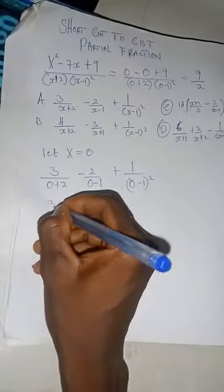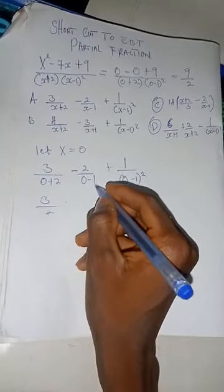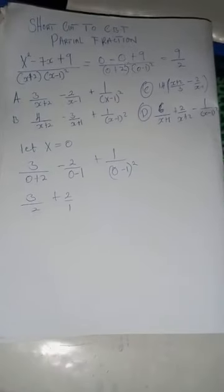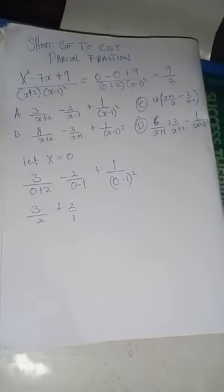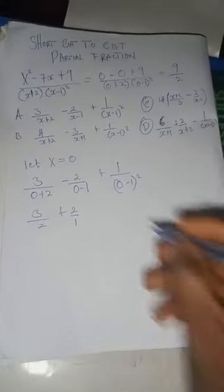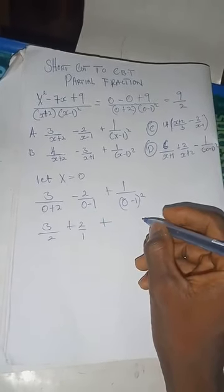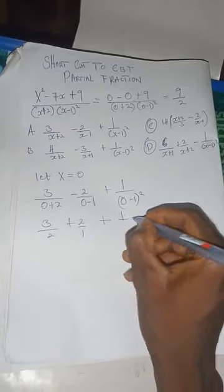We have three over two, minus minus that will give us plus, plus two over one, plus two over one, plus negative squared will give us positive one, then we have one over one.